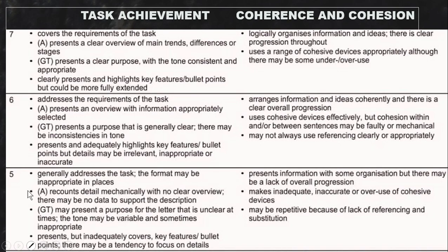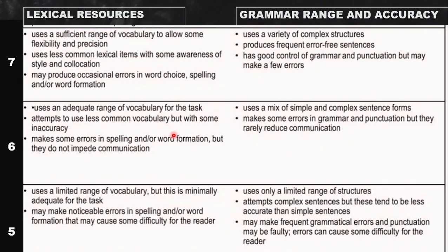It's unusual to be asking about Band 6 since most people aim higher, but to get a Band 6 you have to address the requirements of the task and present an overview with information appropriately selected. You organize your ideas, can make some mistakes in referencing, and in lexical resource you just need an adequate range of vocabulary. Errors in spelling or word formation must not impede communication.